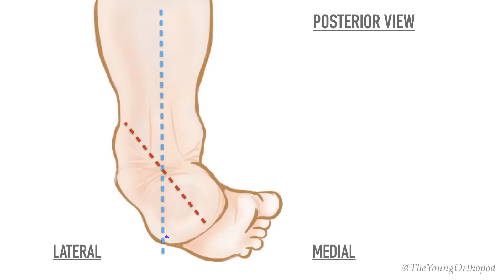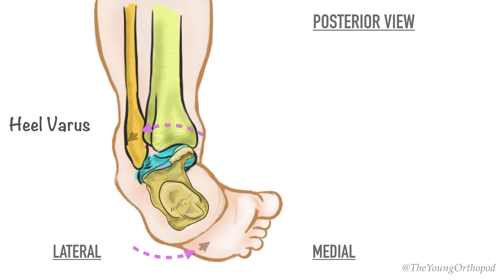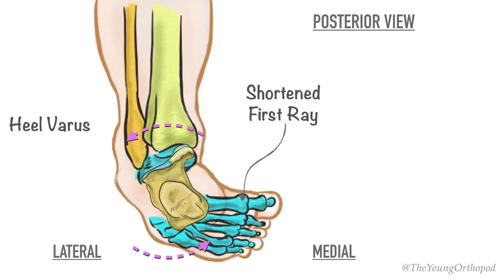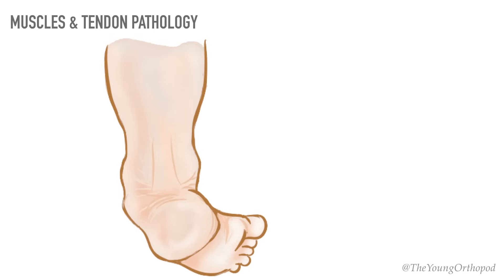The calcaneus is in equinus and the heel is in varus. The heel appears to be in varus because the calcaneus rotates through the talocalcaneal joint in a coronal plane and horizontally. The first ray appears shortened and the metatarsals are fixed in equinovarus. This entire pathological malalignment of the joints is maintained by contracture of the soft tissues.